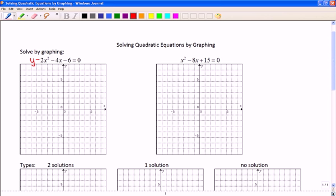For example, let's pretend this is the parabola y equals 2x squared minus 4x minus 6, and we're going to graph it by finding its vertex.